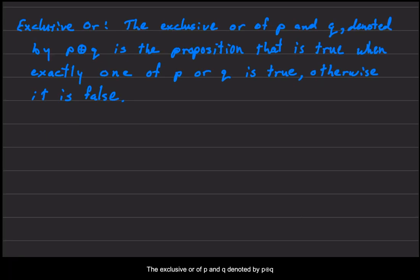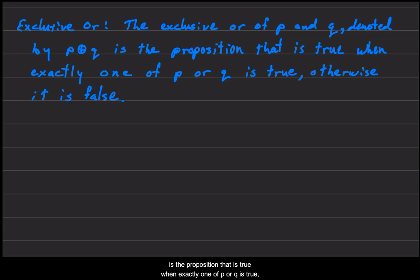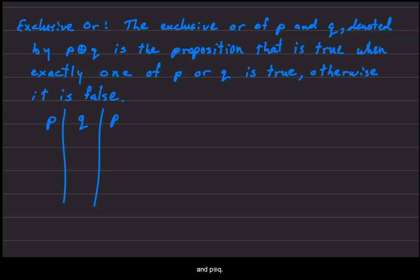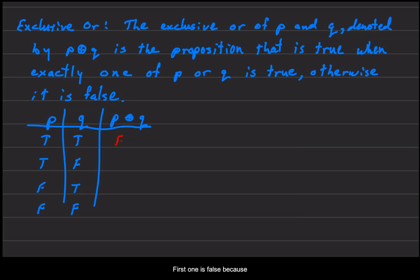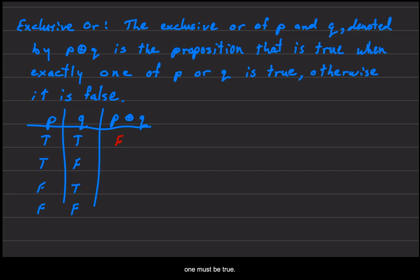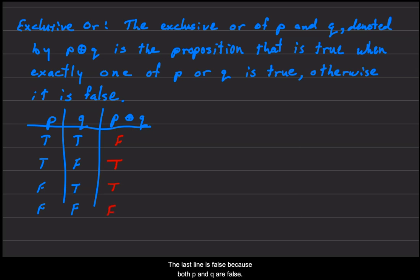The exclusive OR of P and Q, denoted by P XOR Q, is the proposition that is true when exactly one of P or Q is true; otherwise it is false. Looking at the truth table with columns P, Q, and P XOR Q: the first row, both true, is false because it violates the rule that exactly one must be true. The second row, true then false, has exactly one true — so that's true. The third row, false then true, is also true. The last row is false because both P and Q are false.